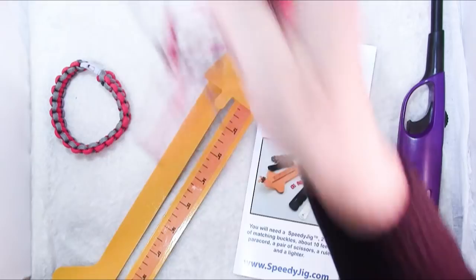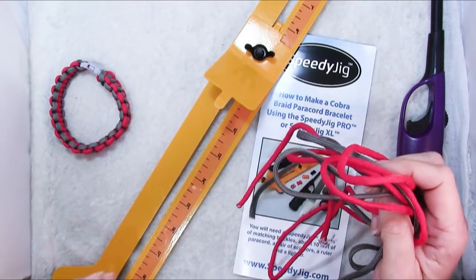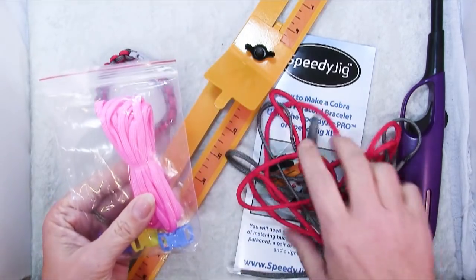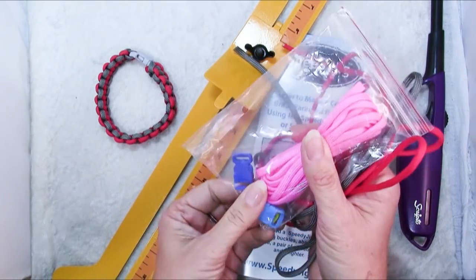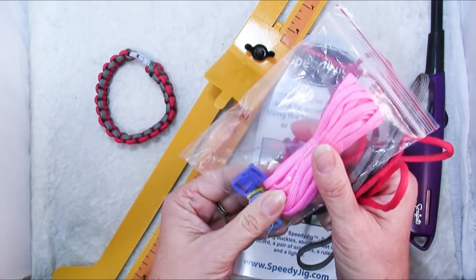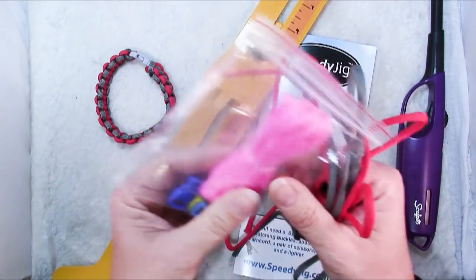You get the jig which is adjustable. You also get ten feet each of three different types of paracord and four clasps, which I thought was a mistake but then when I read more carefully I realized that that's by design.